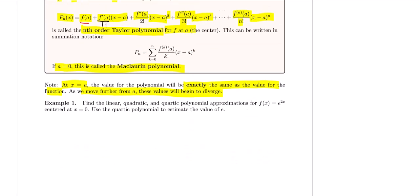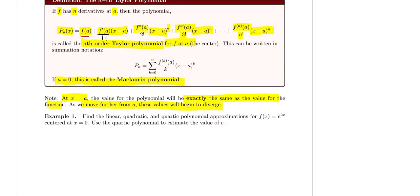Let's practice with our first Taylor polynomial to make polynomial approximations for the function e to the 2x. We want to find a linear approximation, a quadratic approximation, and a quartic polynomial approximation, all centered at x equals zero. Since we're centered at x equals zero, our a value is zero — a is the center. Since we're going up to the quartic polynomial, that's the fourth order, so I'll create the general form for this fourth order polynomial.